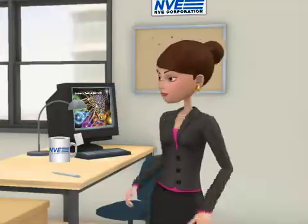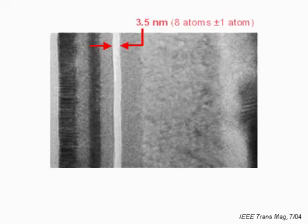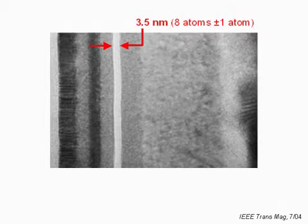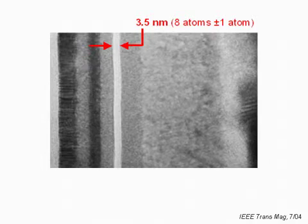Here's an SEM of an actual tunnel junction made here at NVE. This white stripe is an aluminum oxide tunnel barrier, eight atoms thick. This is probably magnified nearly a million times on your screen, so an eight-inch wafer would appear a hundred miles in diameter.